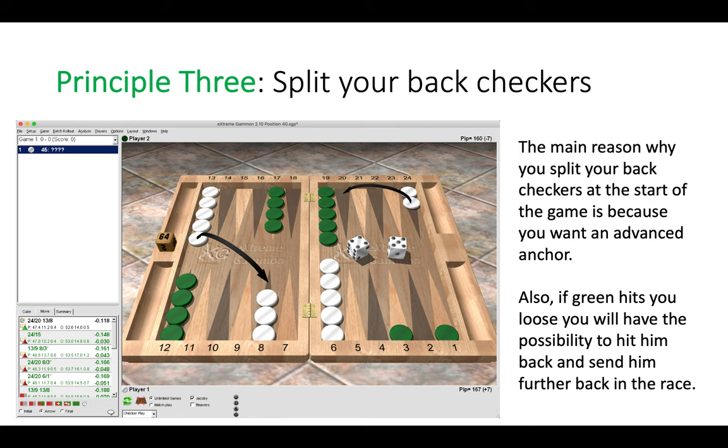The main reason why you split your back checkers at the start of the game is because you want an advanced anchor. So here you split to the 20 point hoping to make that point, the golden anchor, on a subsequent roll. Also, of course, if green hits you on their five point you have the option to hit them back and you would send them further back in the race.